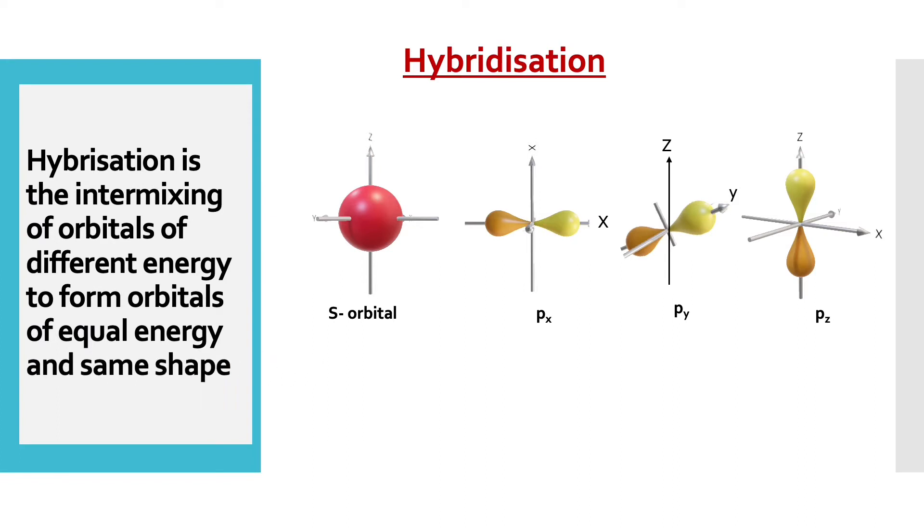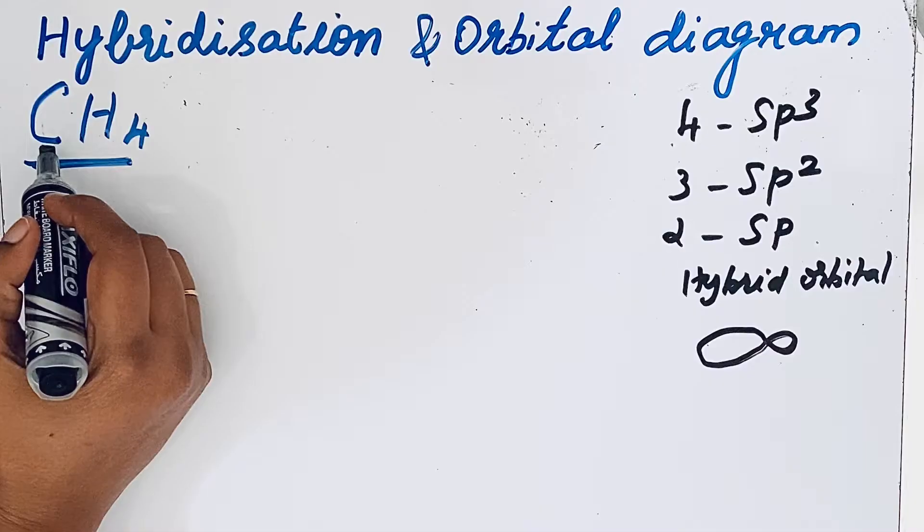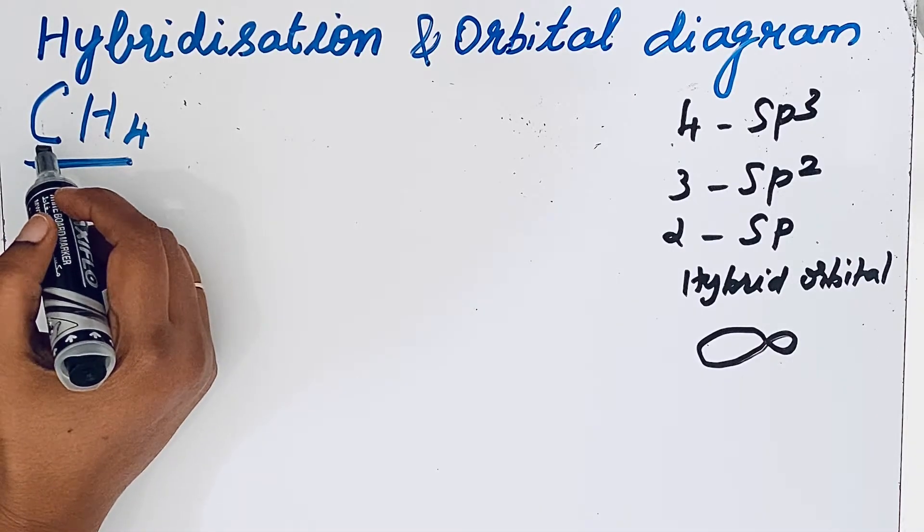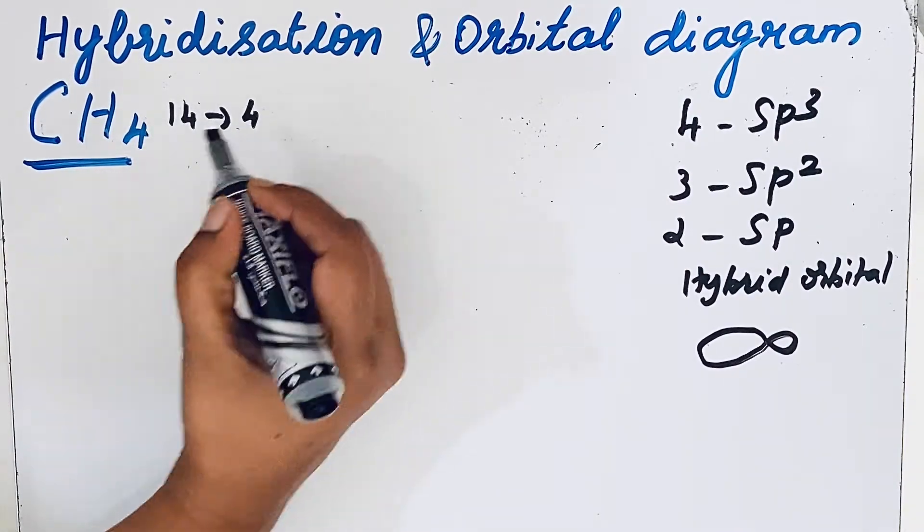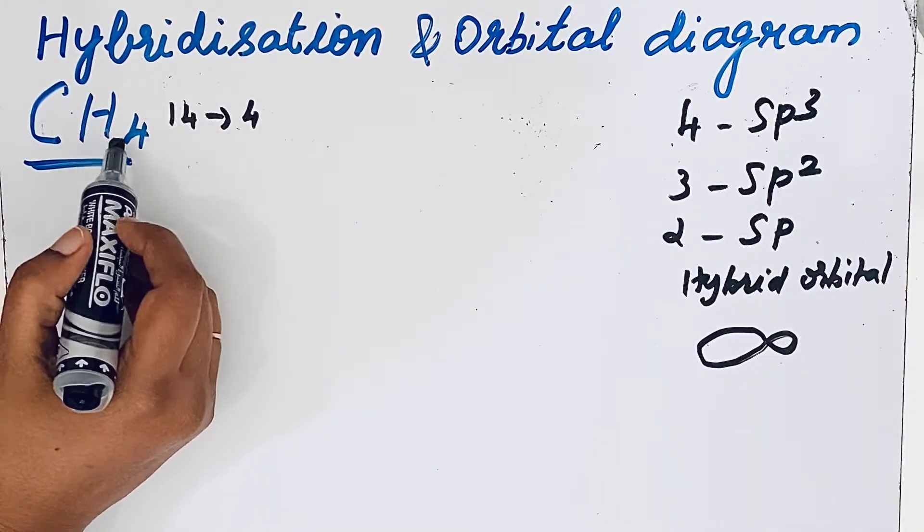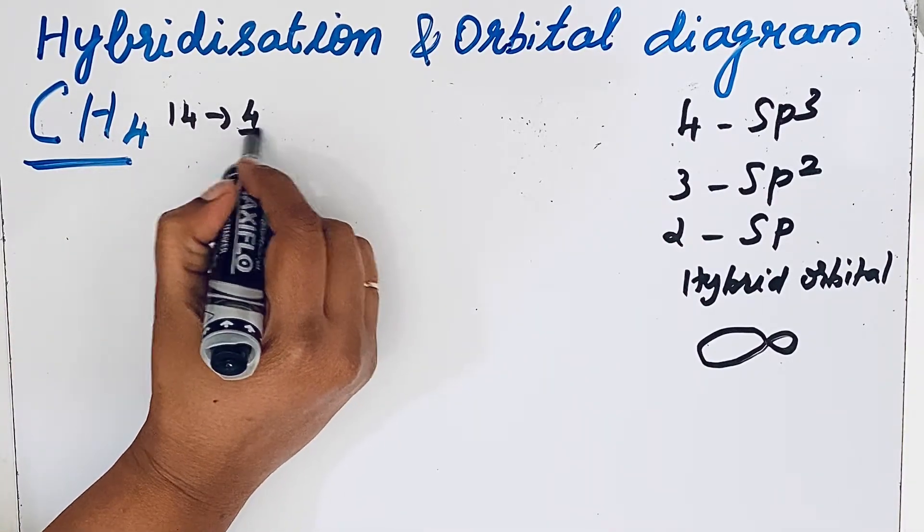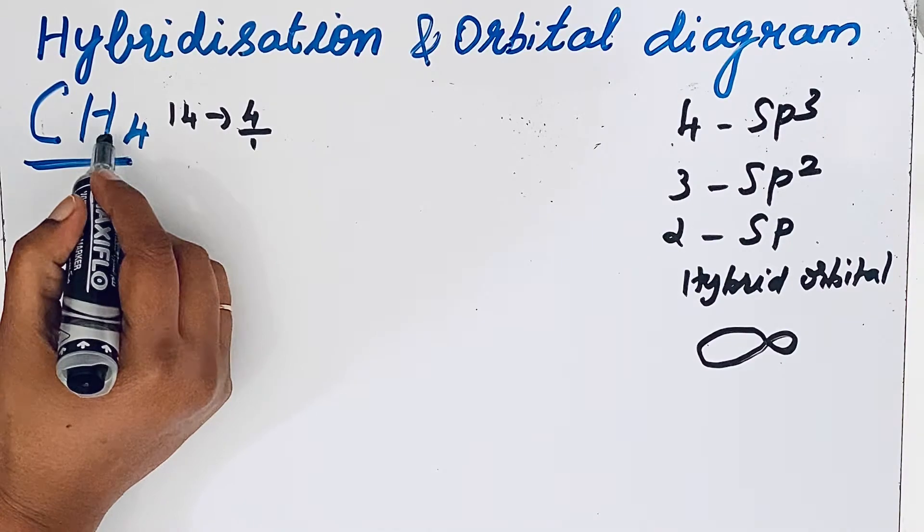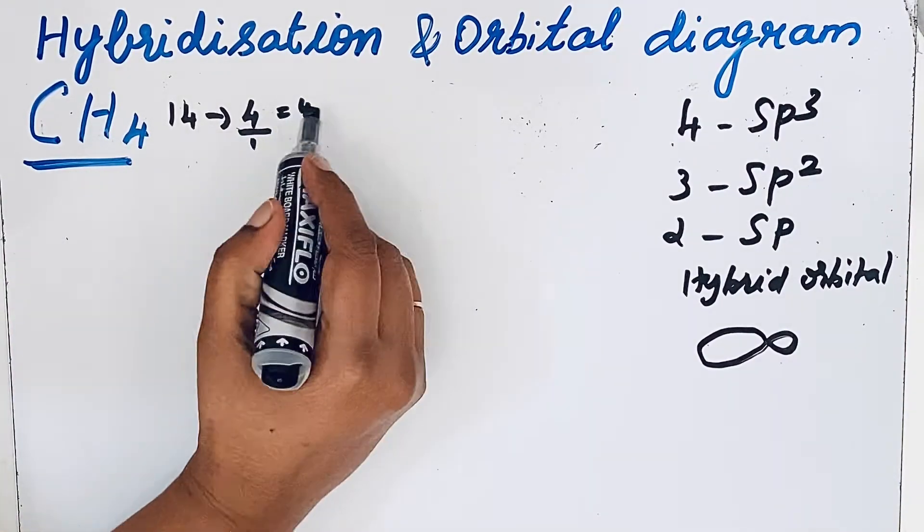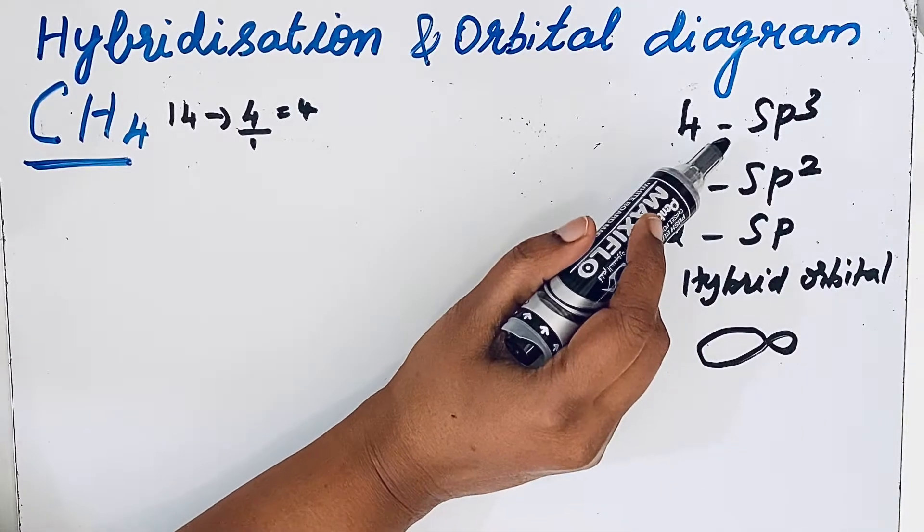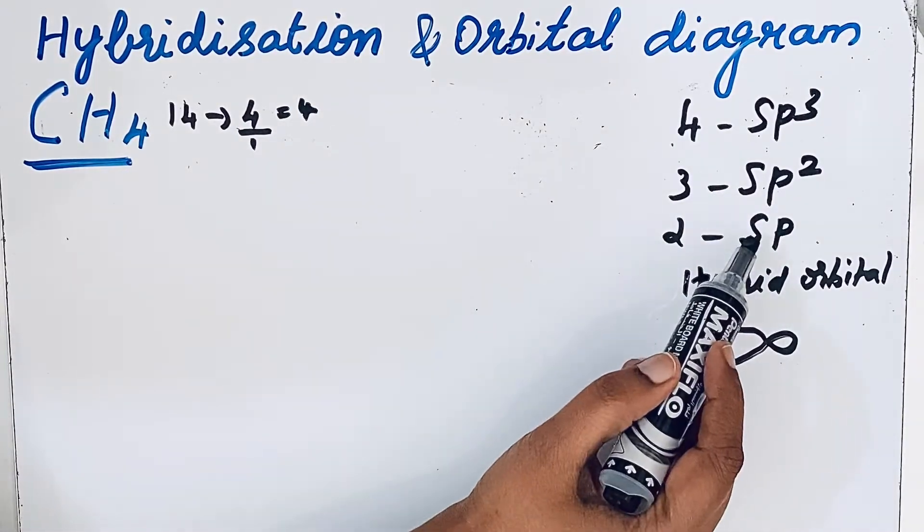To find that hybridization, first let us see that in CH4 the central atom is carbon. It is in 14th group so there are 4 valence electrons present in it, which is attached to hydrogen, a monovalent atom. So just divide that by 1 because it is a monovalent atom. So 4 by 1 we will get 4. So if it is 4, sp3 hybridization; if it is 3, sp2; and 2, sp hybridization.